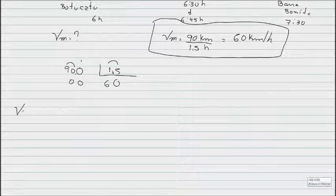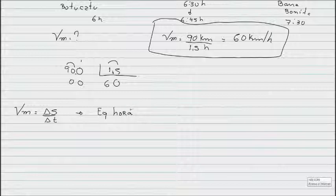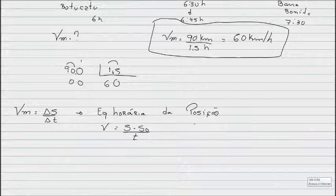Partindo do conceito de velocidade média, que é Δs sobre Δt, eu consigo descrever uma equação que a gente chama de equação horária da posição. O que é a equação horária da posição? A equação horária da posição é tentar definir aonde o corpo vai estar em um determinado intervalo de tempo. A gente faz assim. A velocidade média eu posso chamar de própria velocidade mesmo. A variação de espaço é a posição final menos a posição inicial. E o tempo é o tempo gasto pelo percurso. Estou escrevendo essa mesma equação de uma maneira simplificada aqui.